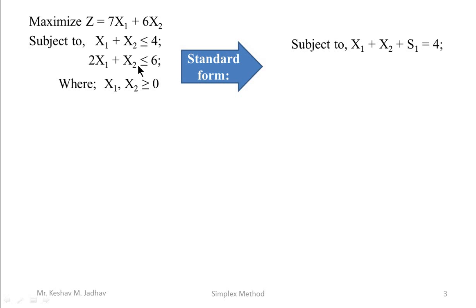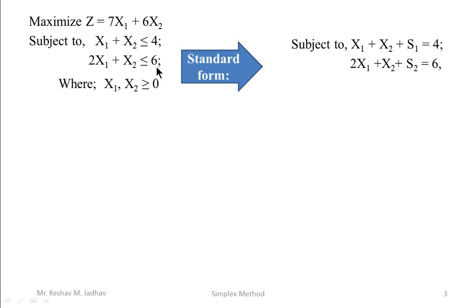Similarly for the second constraint, 2x1 plus x2 is less than or equal to 6. The left hand side of this constraint is less than the right hand side. So if you add a slack variable s2 on the left hand side, then this less than or equal to sign can be replaced by equal to sign. So we can write 2x1 plus x2 plus s2 is equal to 6. The slack variables s1 and s2 are dummy variables. If constraint 1 indicates time constraint for machine 1 and constraint 2 for machine 2, then s1 is the idle time for machine 1 and s2 is the idle time for machine 2. Since slack variables represent idle resources, they contribute 0 to the objective function, so the coefficient of slack variables will be 0.